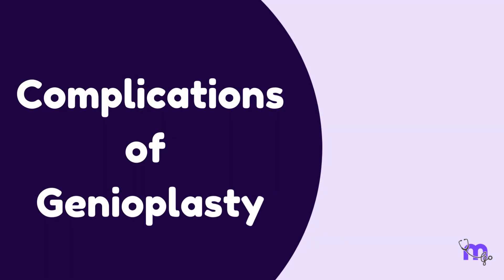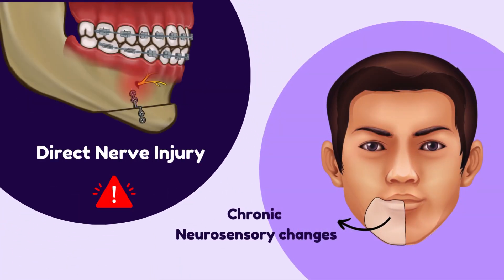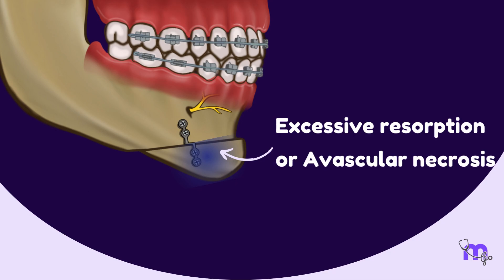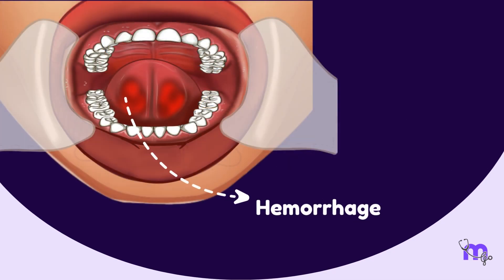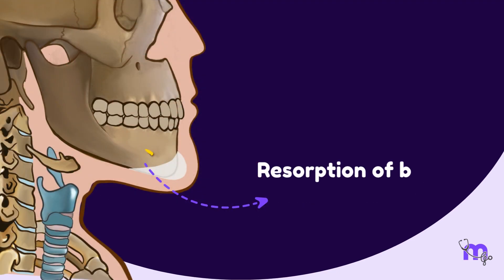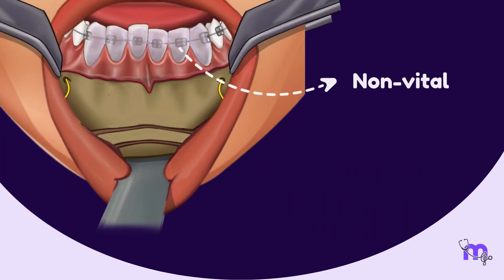Complications associated with this procedure may include: direct nerve injury, which can cause chronic neurosensory changes; the mobilized bone segment may experience excessive resorption or avascular necrosis; rarely, hemorrhage and airway compromise may occur; resorption of bone under alloplastic materials can occur; and teeth may become non-vital due to compromised pulpal blood flow. To prevent this, it is recommended to carry out osteotomies at least 5 mm below the longest tooth root.